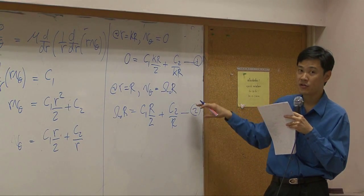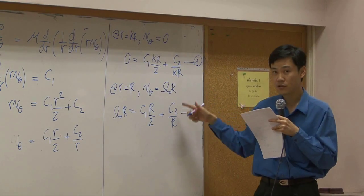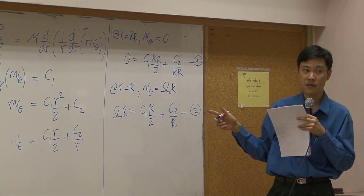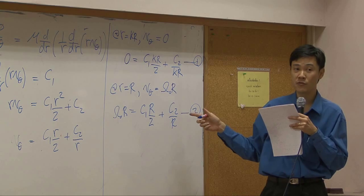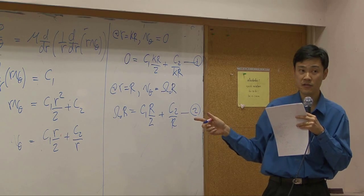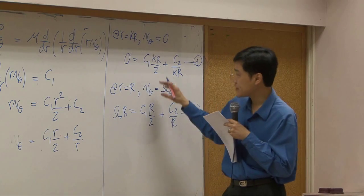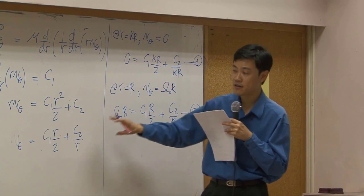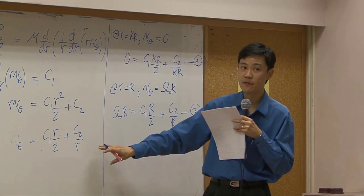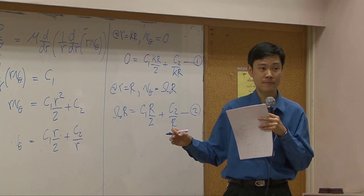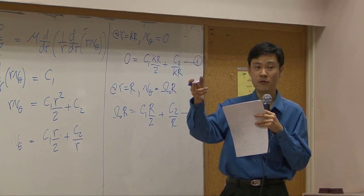Once you have two equations with two unknowns c1 and c2, you can solve for c1 and c2. I don't think I need to do it for you, you can do it by yourself. Once you get c1 and c2, just plug it back in, you get velocity profile. Can you do that? I think so, because you already did the homework.